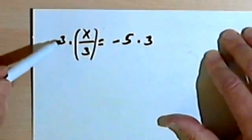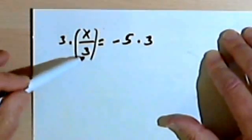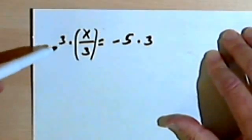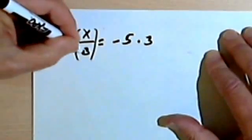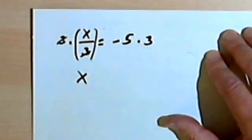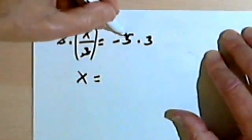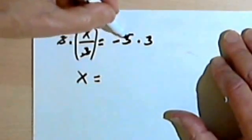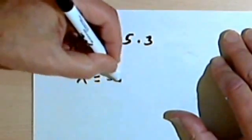Doing the multiplication on the left, these 3's are going to cancel, which is what I wanted to happen. That's what I expected. So I'll cross those out. And now I've just got an x. Doing the multiplication on the right side, I've got negative 5 times 3 is going to give me negative 15.